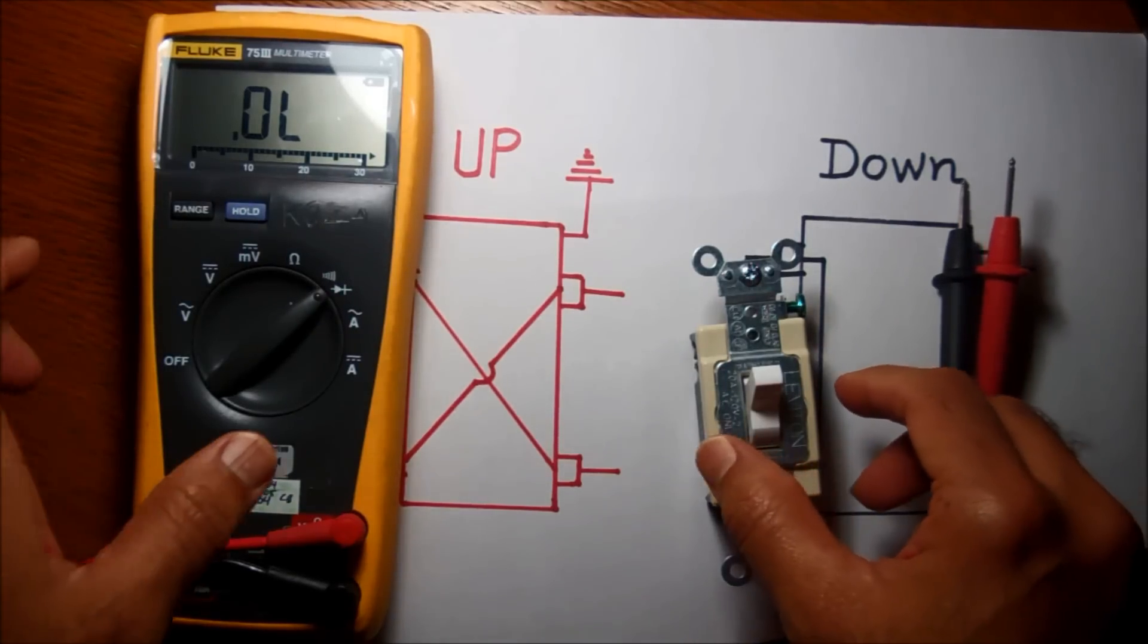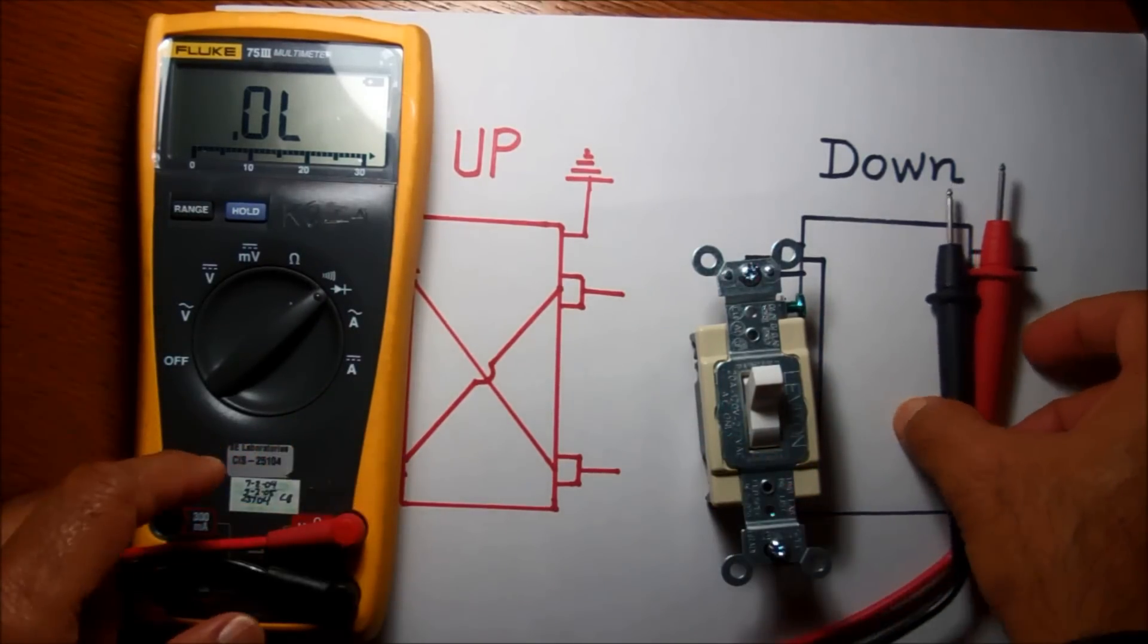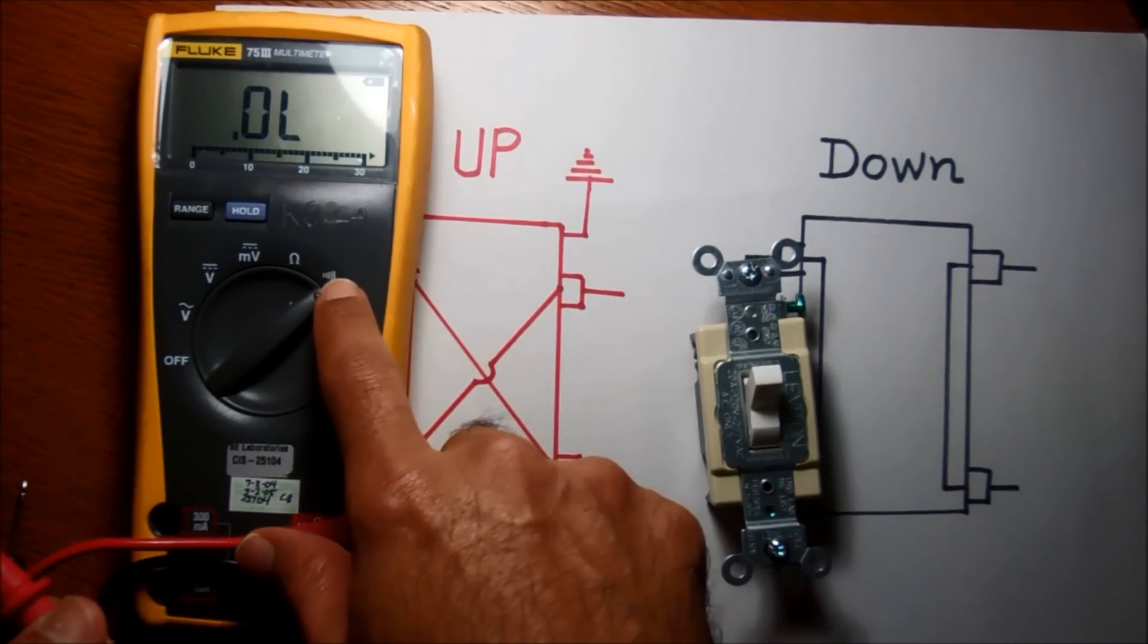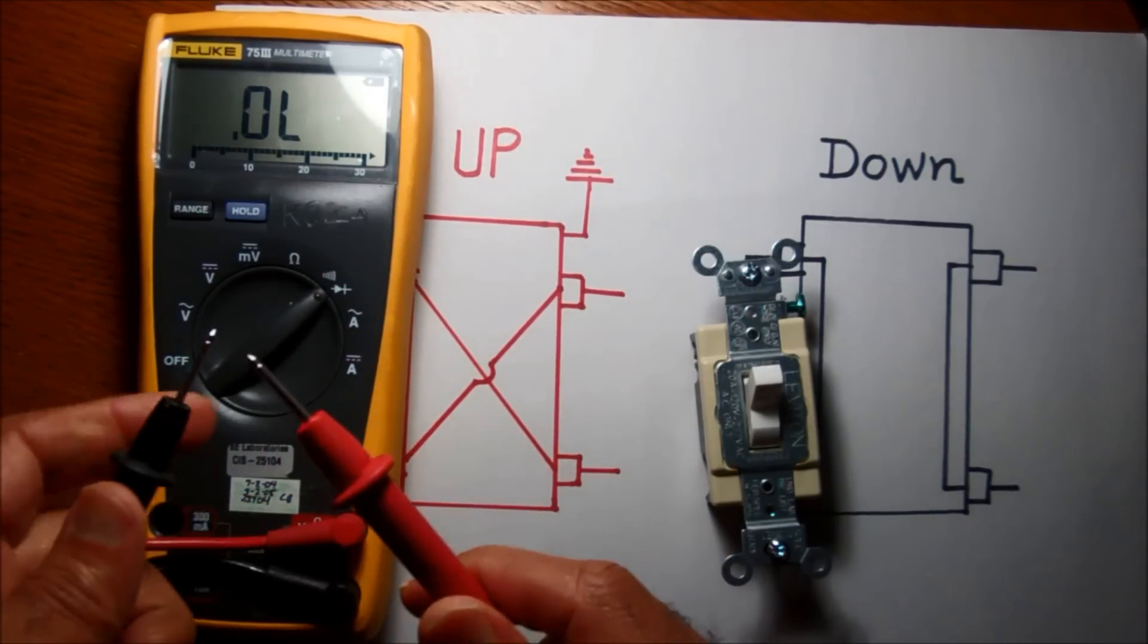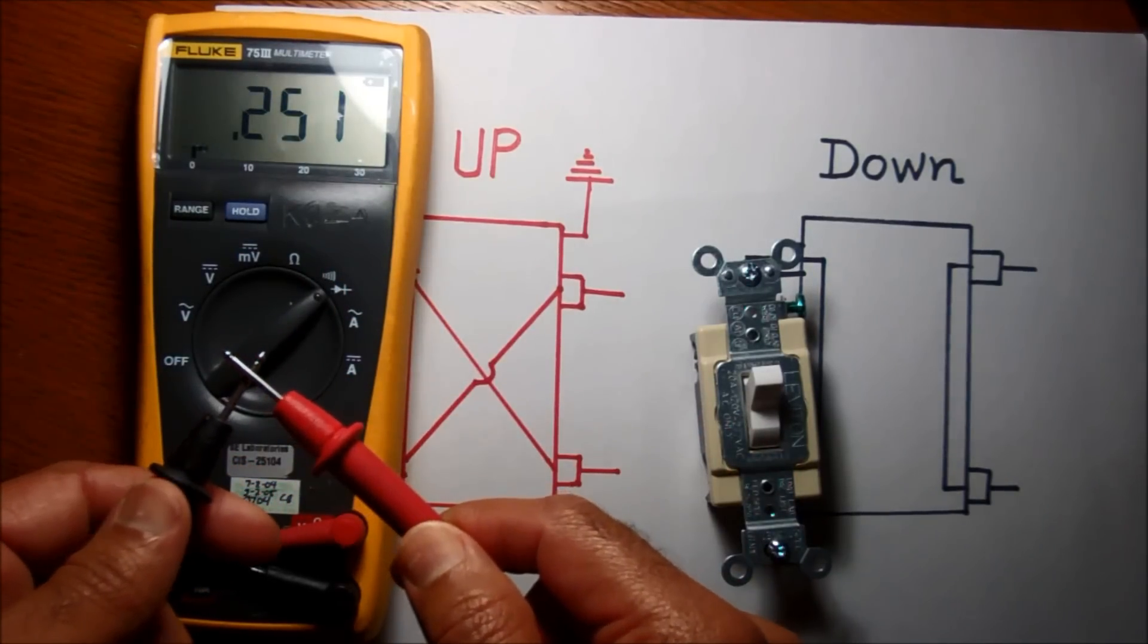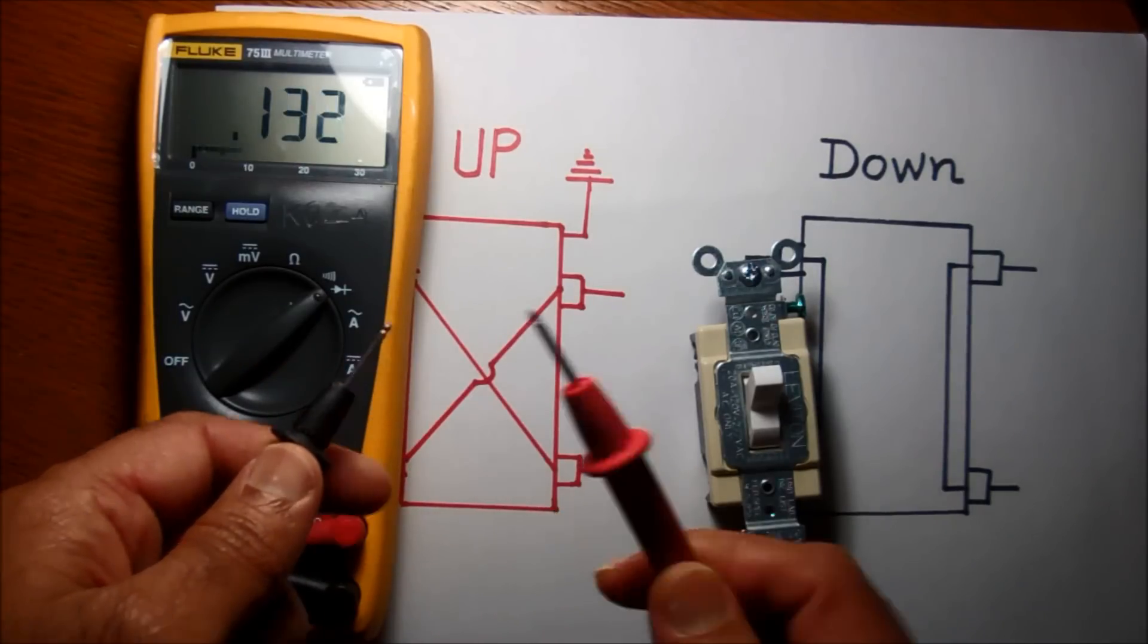Hi, this video shows how a four-way switch works. Here I have a multimeter set to the diode symbol with a buzzer sign. Once I connect these two probes, it will make a sound and buzz, and I know there is continuity.